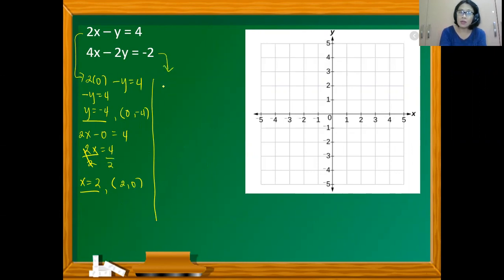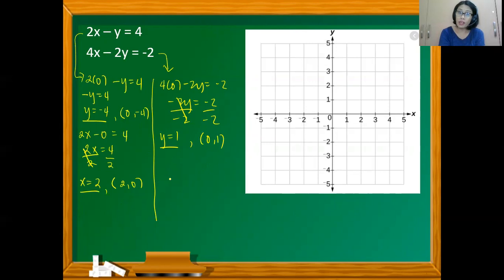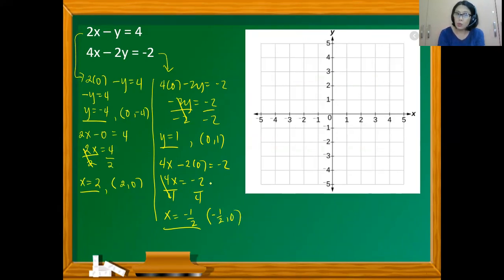Working on the second equation, assigning x equals 0: 4(0) minus 2y equals negative 2, so negative 2y equals negative 2, giving y equals 1. So (0, 1) is one point. Letting y equal 0: 4x minus 0 equals negative 2, so 4x equals negative 2. Dividing by 4, x equals negative one-half. So we have another point at (−½, 0). Plotting (0, −4) and (2, 0) for the first equation, and (0, 1) and (−½, 0) for the second.